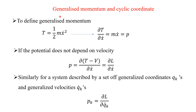First, we will see the generalized momentum and cyclic coordinate. In the case of Lagrangian mechanics, we deal everything with generalized coordinates and generalized velocity, i.e. Q's and Q dots. In the case of Hamiltonian, instead of Q and Q dots, we will use P's and Q's, i.e. position and momentum. In place of velocity, here we are using generalized coordinates as position and momentum.